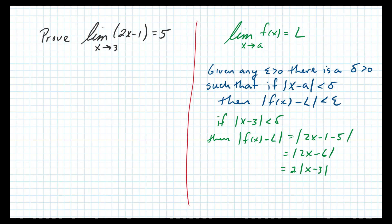But remember, the absolute value of x minus 3 is less than delta, so this is less than 2 times delta, which has to be equal to epsilon. That tells me that delta is going to be half of the epsilon that's given.